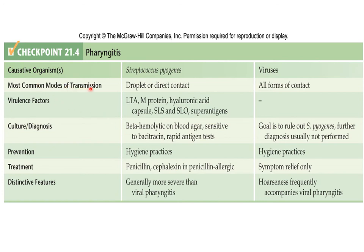The most common mode of transmission: Streptococcus pyogenes causes 90–95% of exudative/follicular pharyngitis or tonsillitis, while non-follicular tonsillitis is mostly caused by viruses. Transmission of Streptococcus pyogenes is via droplets or direct contact; viruses spread via droplet, direct contact, or using the patient's personal belongings.